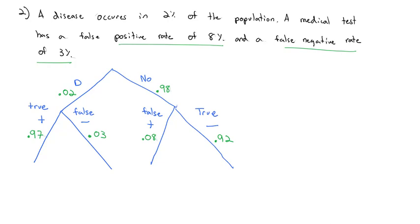Multiplying down the branches: 0.02 × 0.97 = 0.0194 (true positive). 0.02 × 0.03 = 0.0006 (false negative). 0.98 × 0.08 = 0.0784 (false positive). 0.98 × 0.92 = 0.9016 (true negative).